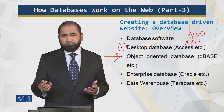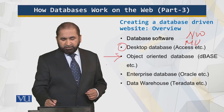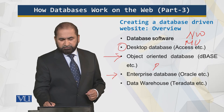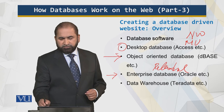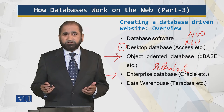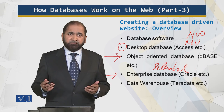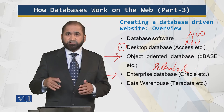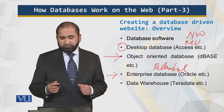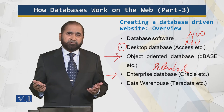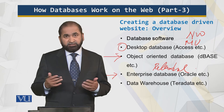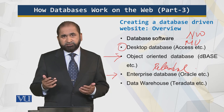Then we have enterprise databases, which are mostly relational, like Oracle and SQL Server. These are relational databases and they have their own database servers with these applications. And then we have data warehouses, like Teradata, where data comes from heterogeneous sources and data sizes are large. So those are the six different flavors.